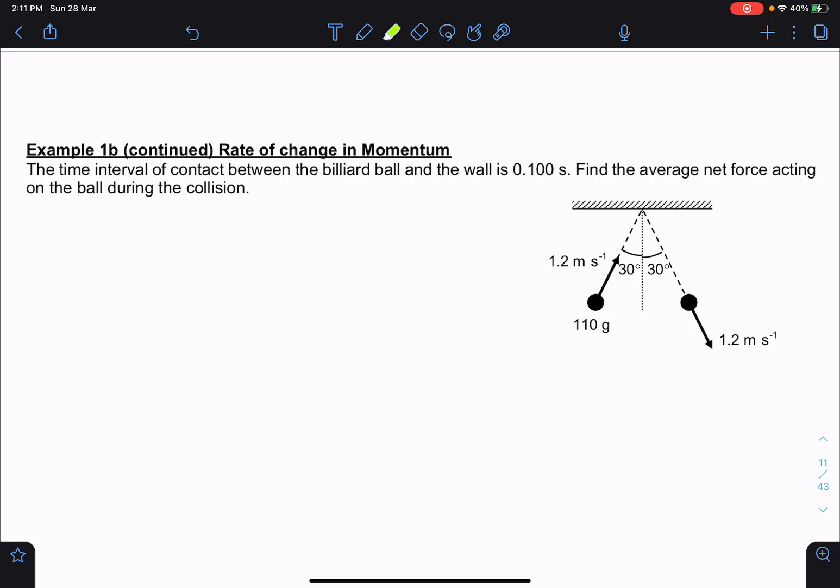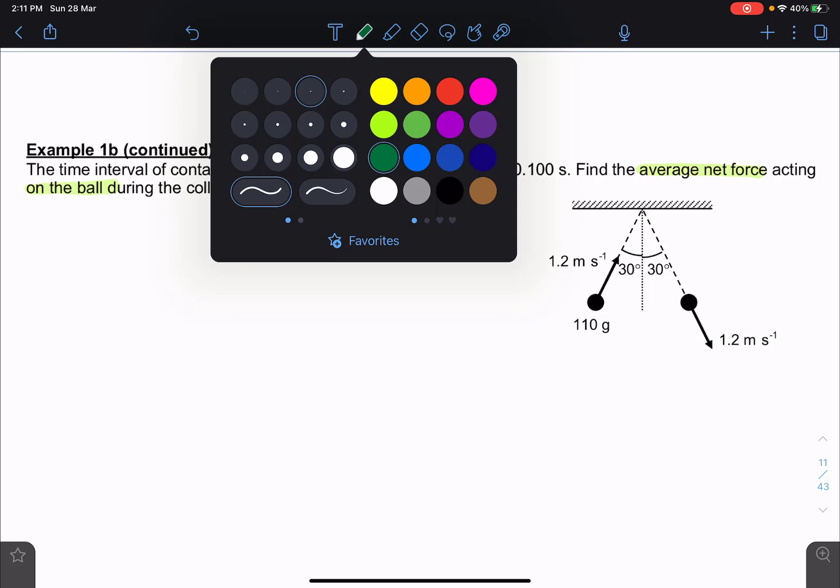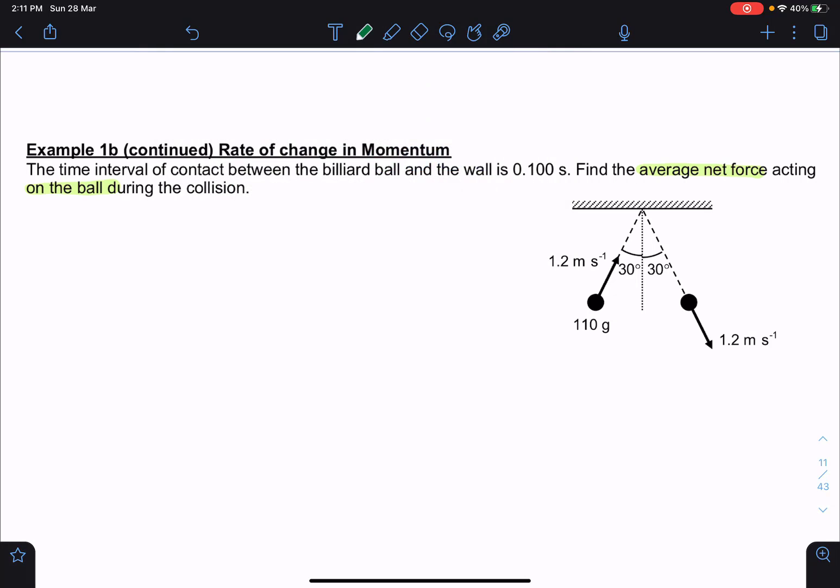Let us now look at example 1b. This is actually an extension of example 1a, except in this case, for the billiard ball, we are interested in finding the average net force that's acting on the ball during the collision. So let us look at how to use Newton's second law to actually apply to this problem.